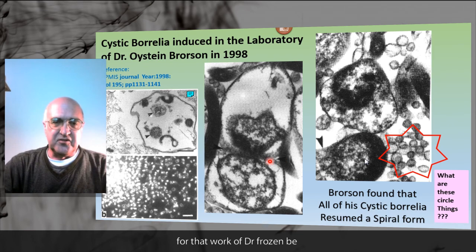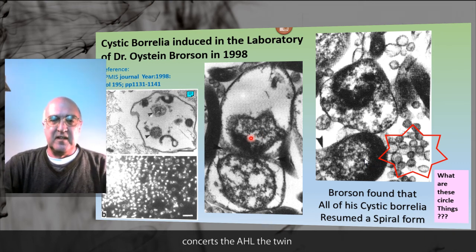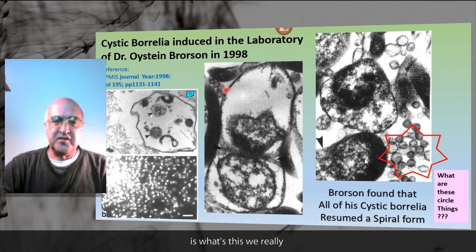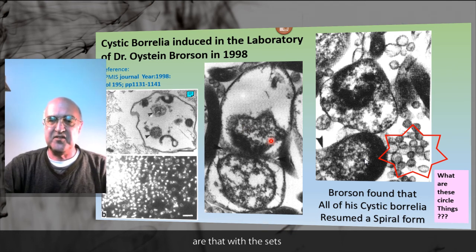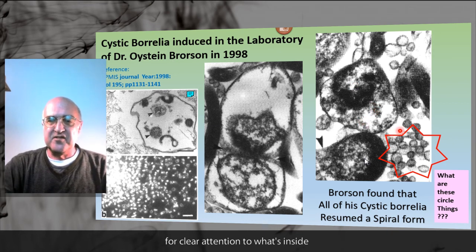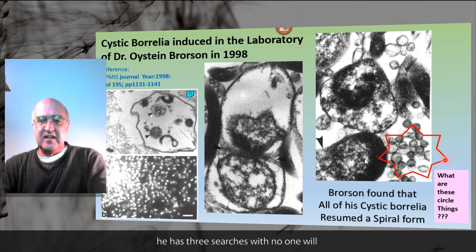From the work of Dr. Brorson, we see that the cystic forms may have little content or may have dense content within the structure of the cyst. The darkly staining structures may look like degenerating cells. Here's one cyst with dark content within the cyst. Here's another cyst with dark content and with smaller granular forms. I call your attention to what's inside the red star area — these are mystery structures right now, but we'll find out what they are.